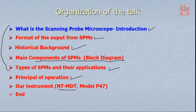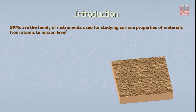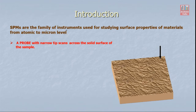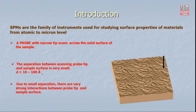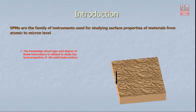First, we are going to start with the introduction of scanning probe microscopes. Scanning probe microscopes are actually a family of instruments used for studying surface properties of materials. There is a narrow tip — a probe — which scans the solid surface of the sample, and the separation between the probe tip and the sample surface is very small, about 10 to 100 angstroms.